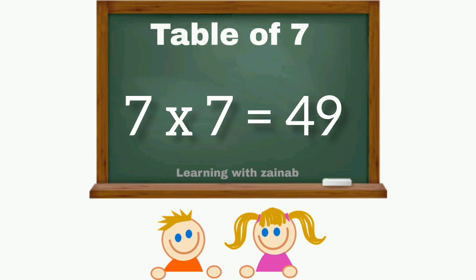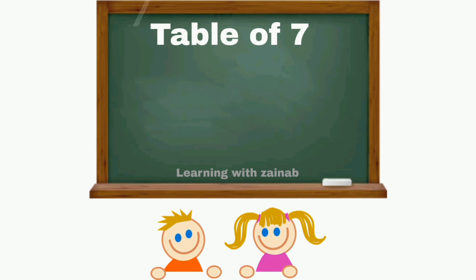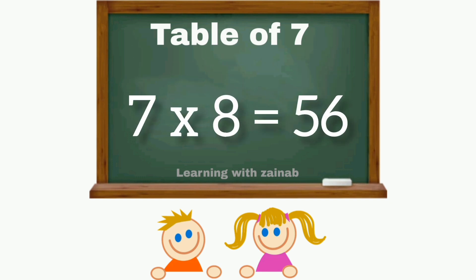Seven sevens are forty-nine. Seven eights are fifty-six.